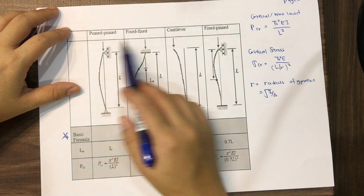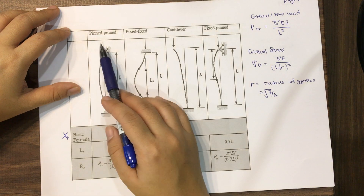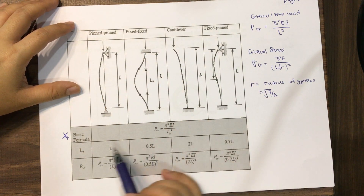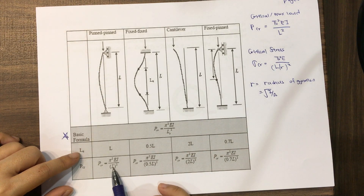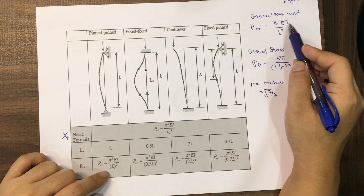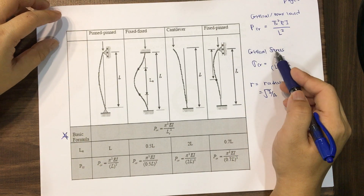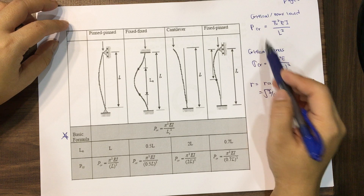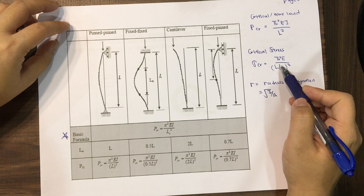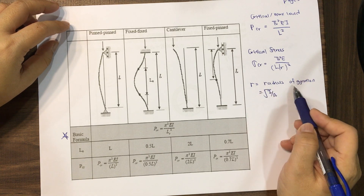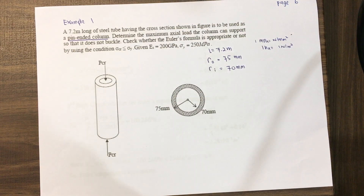When a question comes, check the support connections first, then identify L_E. You cannot simply use the original length L — in the P_CR formula, L changes according to the effective length for the given support conditions. The critical stress is P_CR / A, or equivalently π²E / (L/r)², where r is the radius of gyration equal to √(I/A).